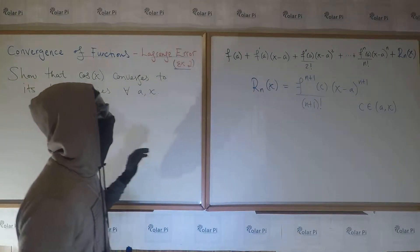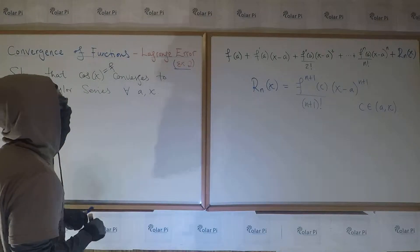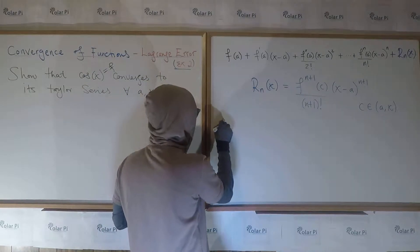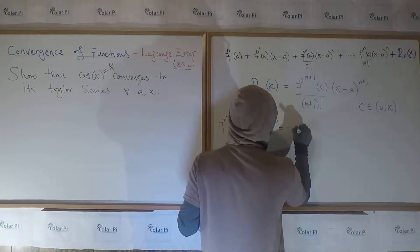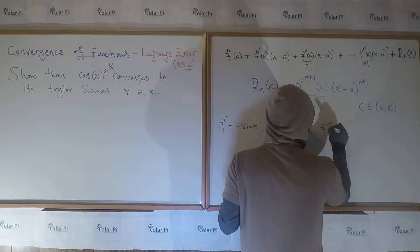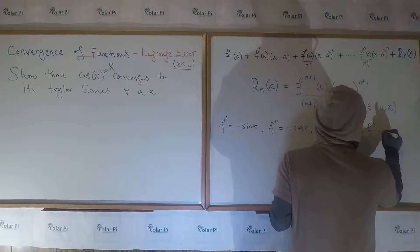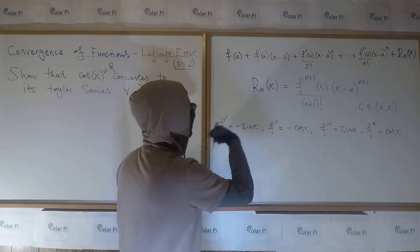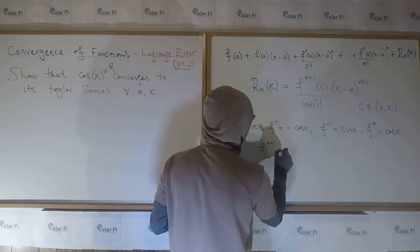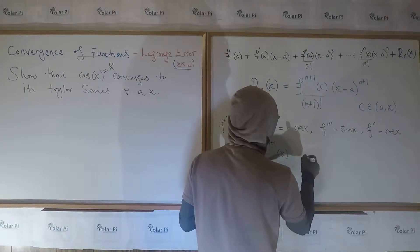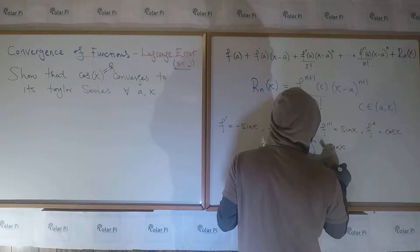The first thing we should do is figure out what the n plus first derivative of f equals cosine x has to be. If f is cosine x, we know that f prime is equal to negative sine x, and f double prime is equal to negative cosine x. f triple prime is equal to sine x. And then the fourth derivative is going to equal cosine x, and if we keep going, we're just going to cycle back. So then we see that the n plus first derivative has to be one of these four: plus or minus sine x, or plus or minus cosine x.